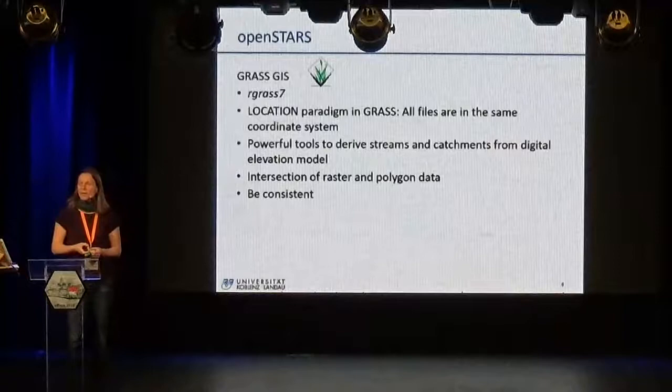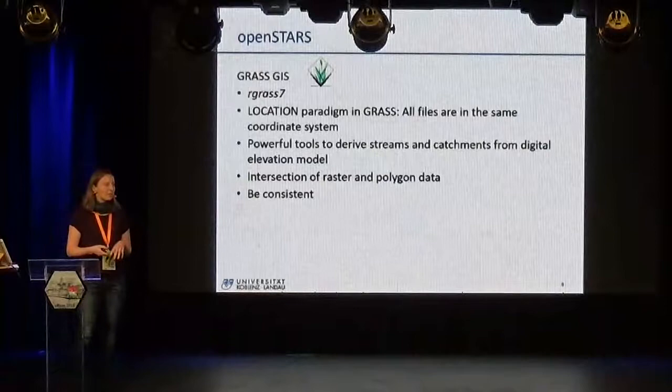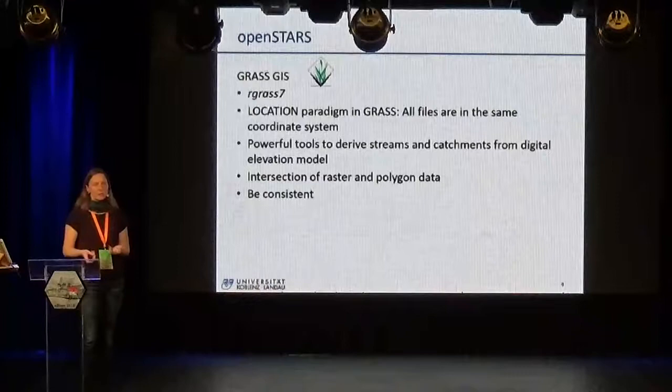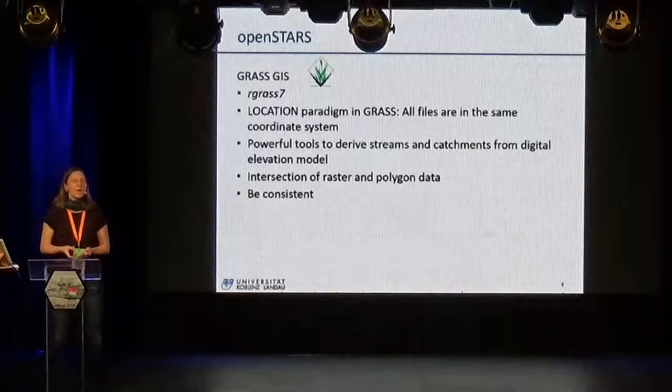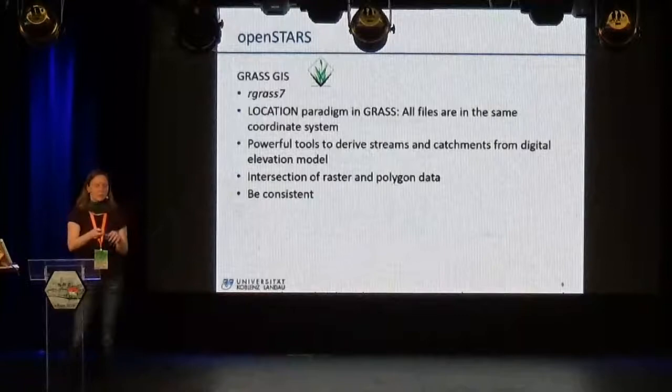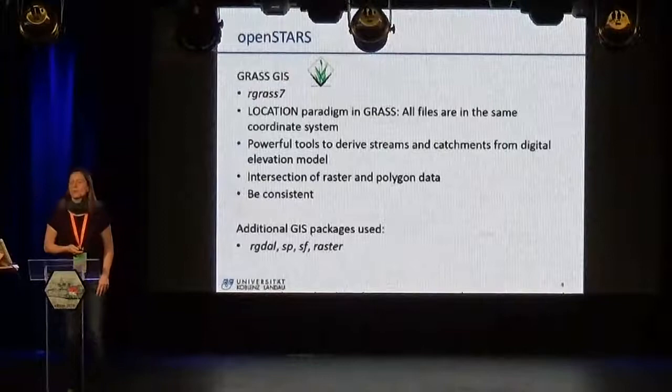Why did I choose GRASS for this? It's connected with RGRASS7. One reason is that GRASS has this very strong location paradigm — it forces you to have all the data in the same coordinate reference system. If you have worked with spatial data, you know that this can be a pain in the neck. There are functions in the package that help you import all the data into the same location, so GRASS takes care that it really has the same projection. Additionally, it has powerful tools to derive stream networks from a digital elevation model and to derive the catchments that you need for the analysis, as well as functions to intersect raster and polygon data.